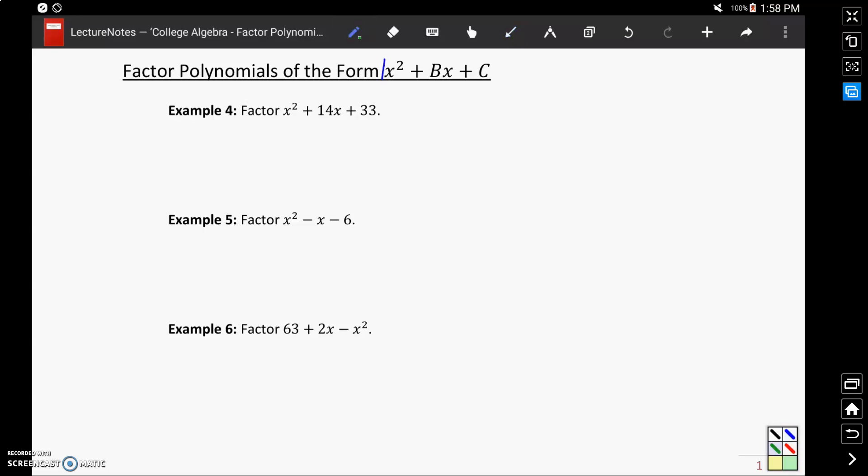To start these off, what we want to do is look at our value for c, which is that constant term at the end. In this case it's 33, we want to construct a list of all factors of 33. So, for instance, we can multiply 33 and 1 to get 33, or 11 and 3.